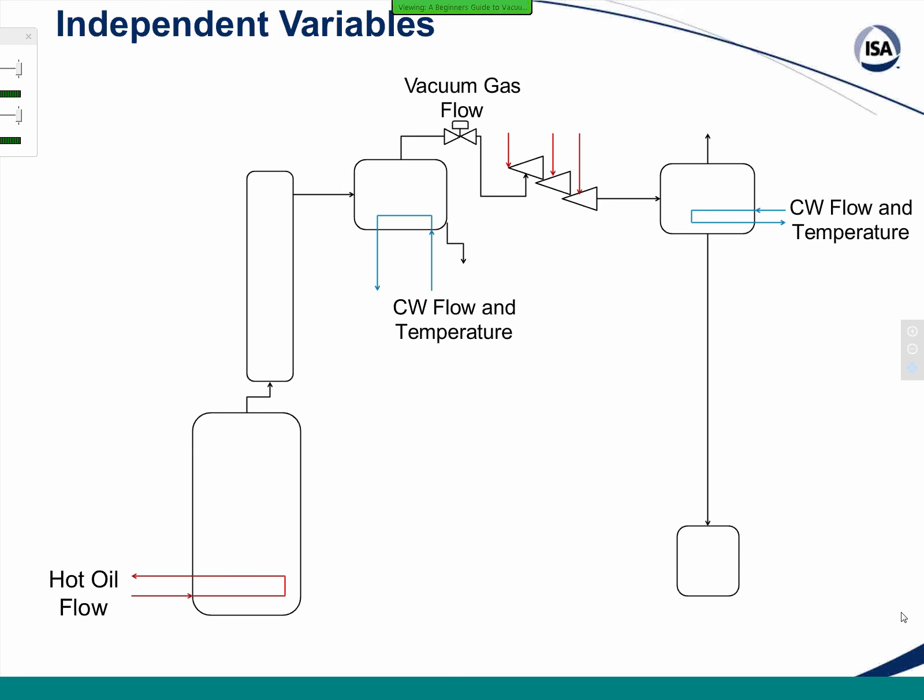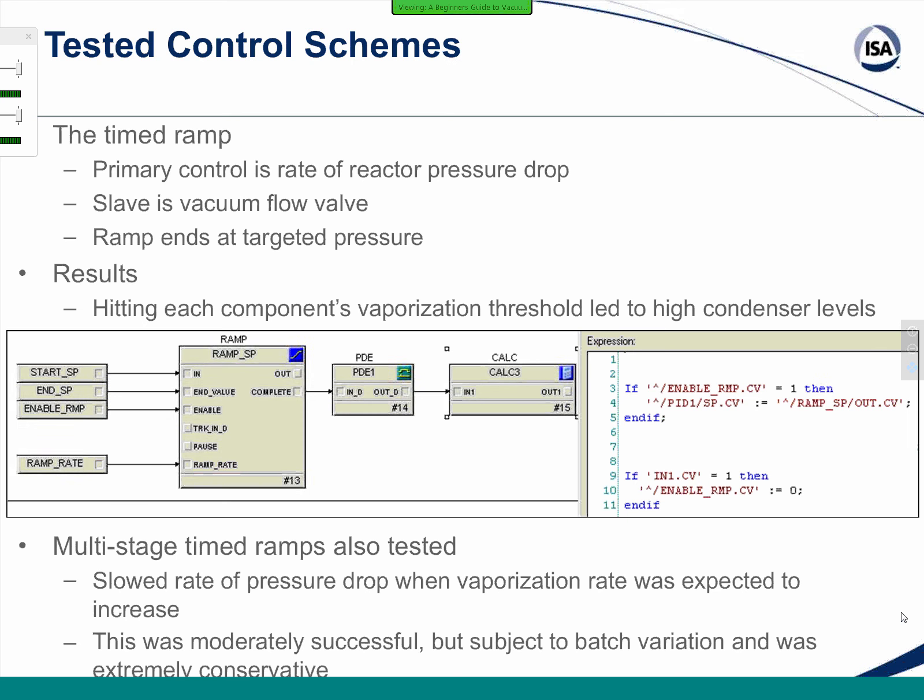Now let's look at what we have available in order to control those variables. We can turn the following knobs: we have hot oil flow, which we can use to change the temperature and push us back further on that vaporization curve for the temperature and pressure. We have cooling water flow and cooling water temperature, both of which are controllable. And then the main knob is still the amount of vacuum flow that's going to the vacuum system.